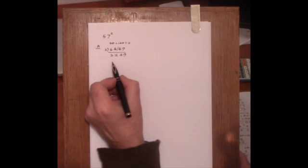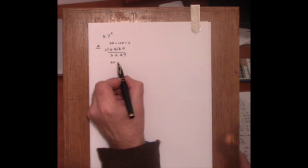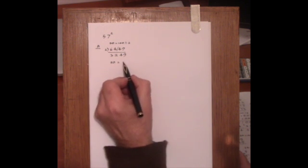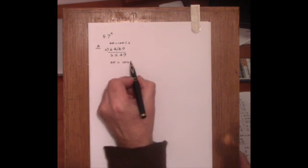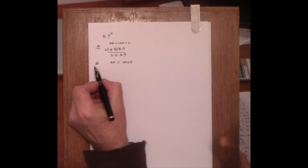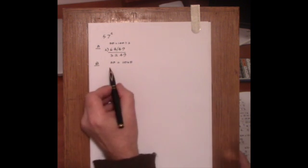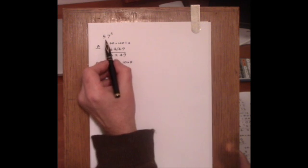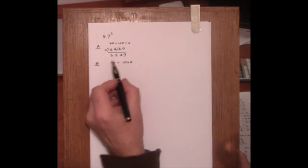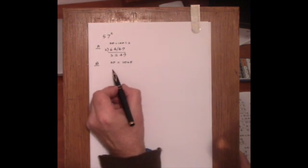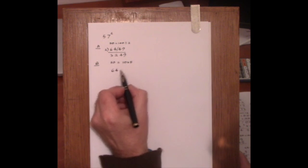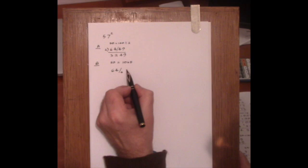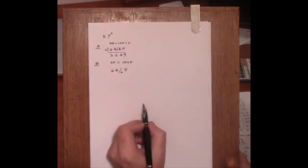But we could also take 50 as 10 multiplied by 5. So the second method, method B, is that we increase the 57 by the surplus, making 64. This time we're only allowed one digit on the right, so 7 squared is going to be 9 with 4 to carry.